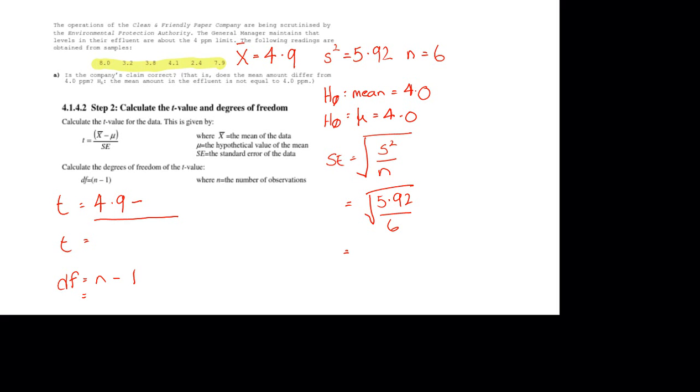Now, we can state the null hypothesis here as the mean of the population is equal to 4.0, or putting it in symbols, mu, the mean is equal to 4.0.